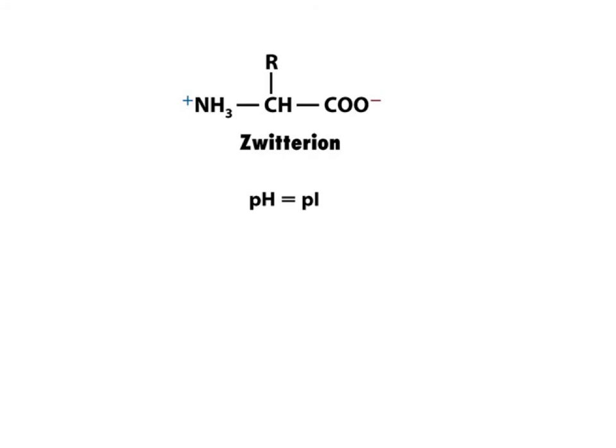Amino acids contain both an acidic group, a carboxylic acid group, and a basic group, an amino group. However, at physiological pH, the carboxylic acid group will be deprotonated and the amino group will be protonated.